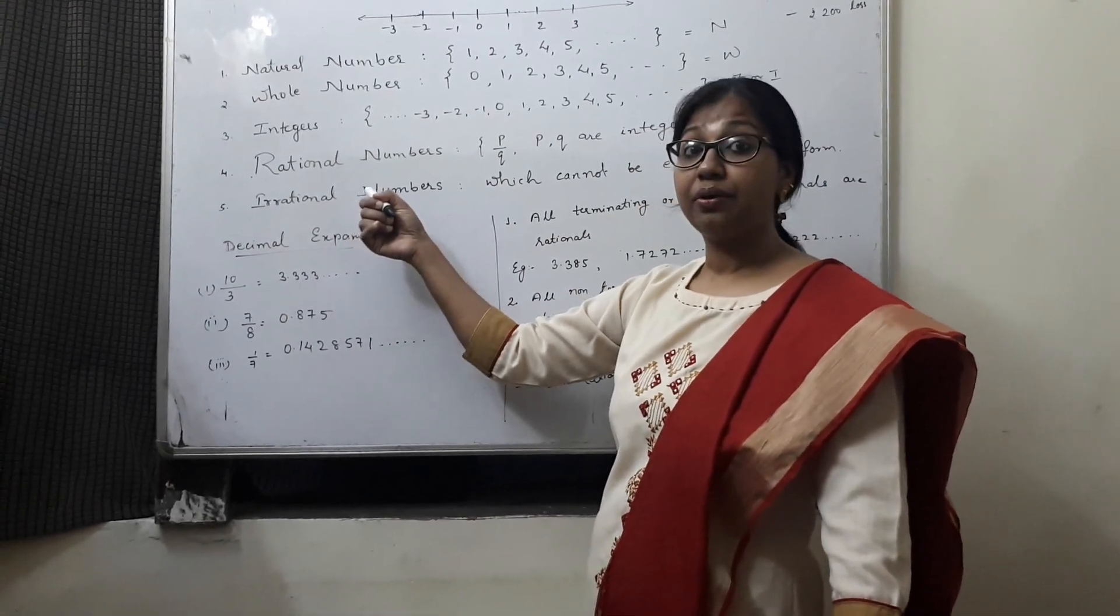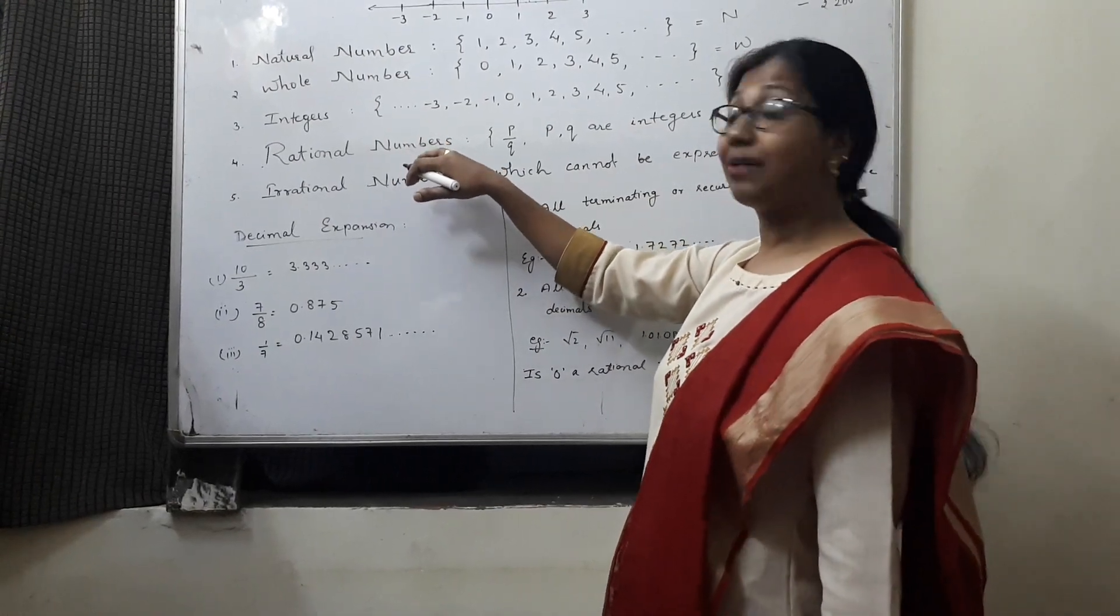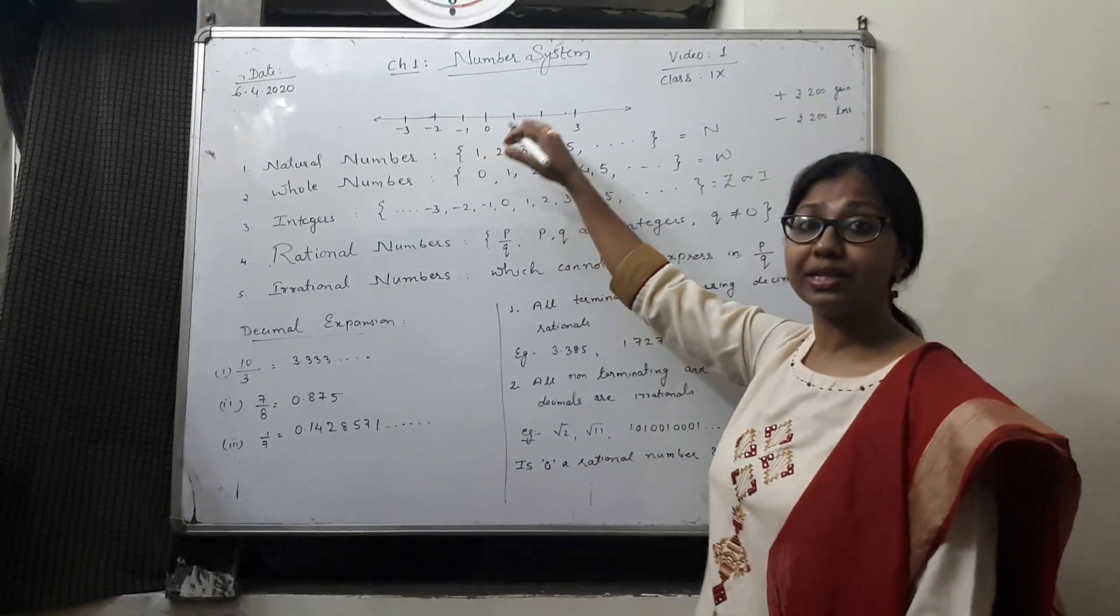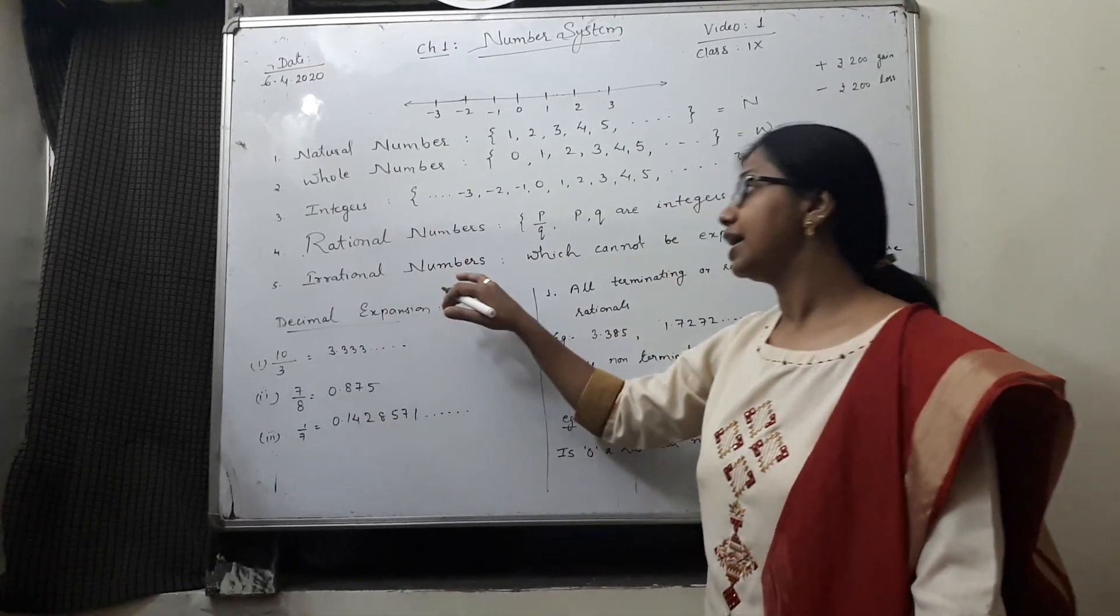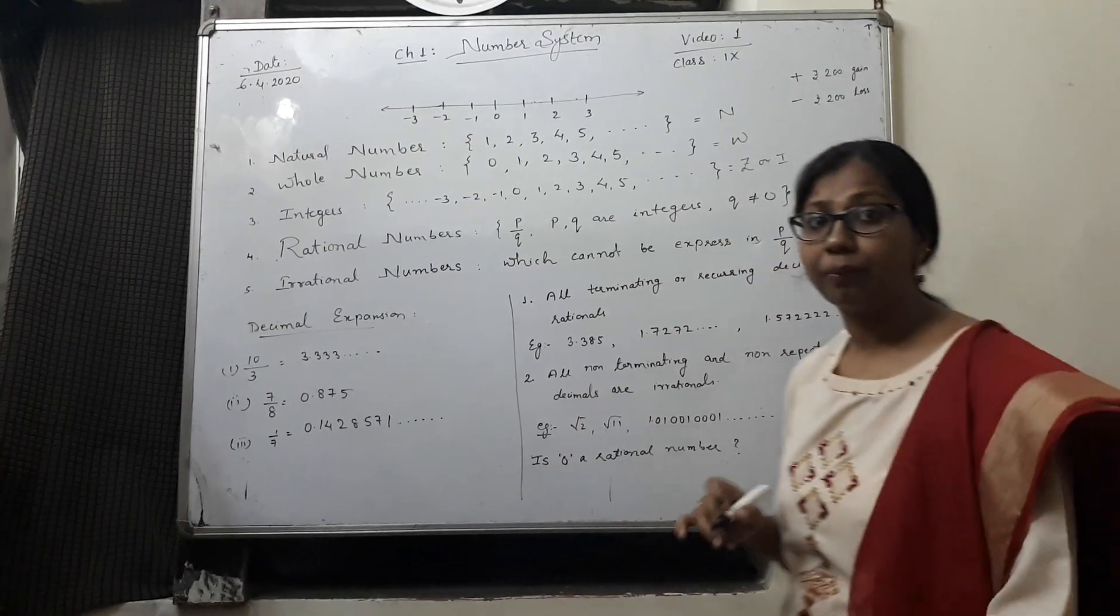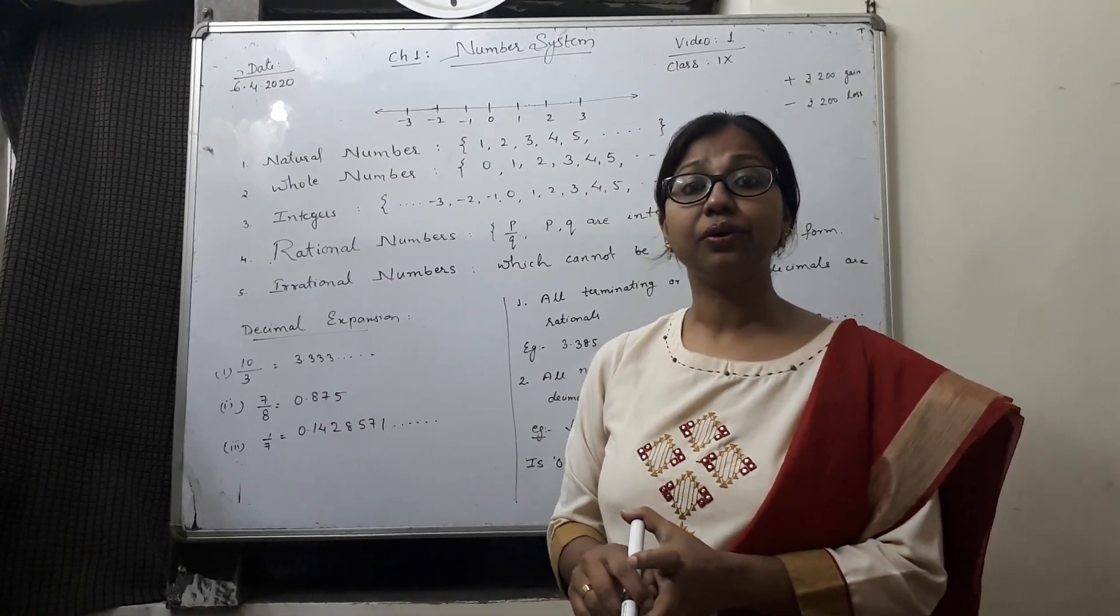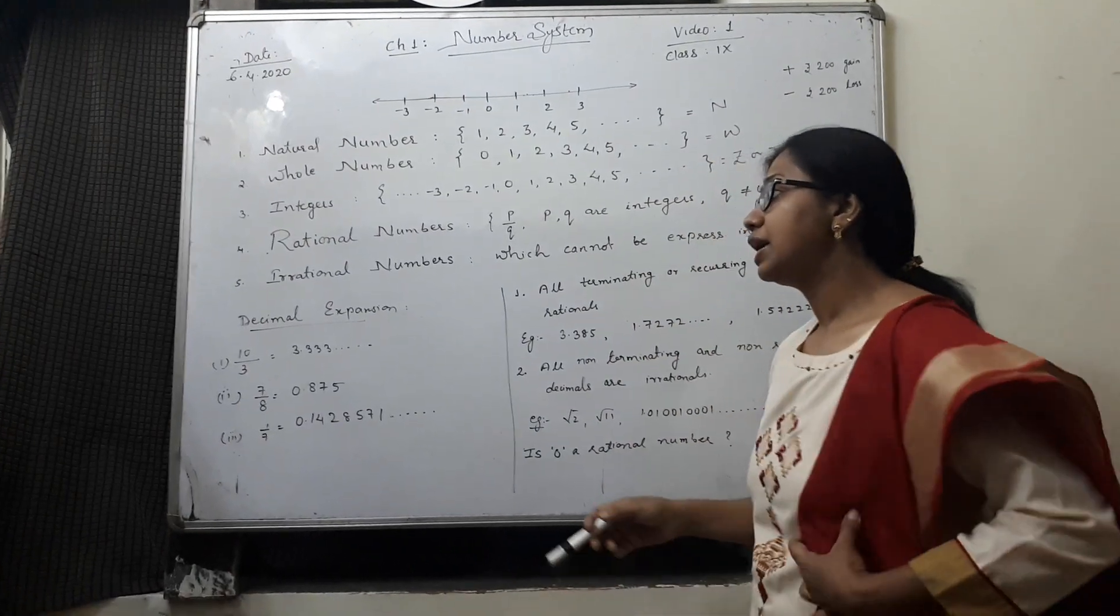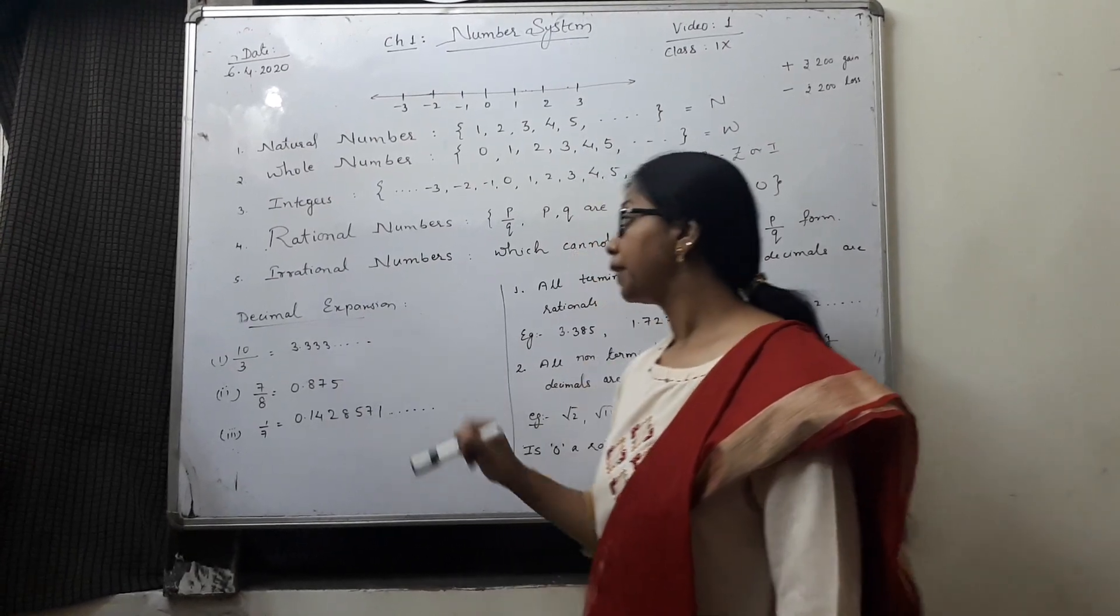And the numbers, we get many numbers which is not rational. We can represent any number on this number line which is not rational. That number comes under a rational number which we cannot represent in P by Q form. Now, you might be surprised. Pythagoras is not only famous for giving Pythagorean triplets or Pythagoras theorem but also he has defined, found the irrational numbers too.